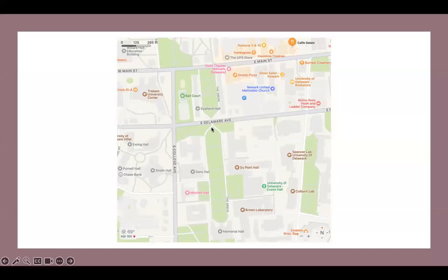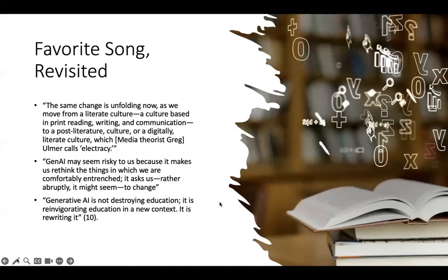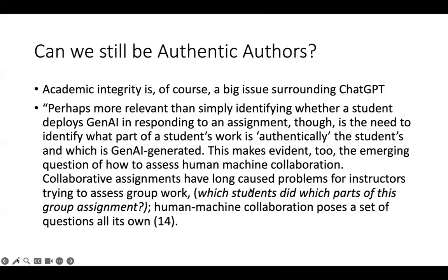You could go back to ChatGPT and say 'assume I'm a UD student,' but it couldn't assume you're a UD student with a complex set of emotional relations to your environment. Of course Dobrin's article gets to authenticity, and that's a question I would pose to you: can we still be authentic authors with this tool out there? You've definitely heard academic integrity come up whenever ChatGPT comes up — people want to say that's plagiarism if you use that, which I don't think is true. I think there are ways to use it and incorporate it. But Dobrin says perhaps more relevant than simply identifying whether a student deploys generative AI in responding to an assignment is the need to identify what parts of a student's work are authentically the student's and which are AI-generated. This makes evident the emerging question of how to assess human and machine collaboration. Collaborative assignments have long caused problems for instructors trying to assess group work — which students did which part? And in the same way, human-machine collaboration poses a set of questions all its own.